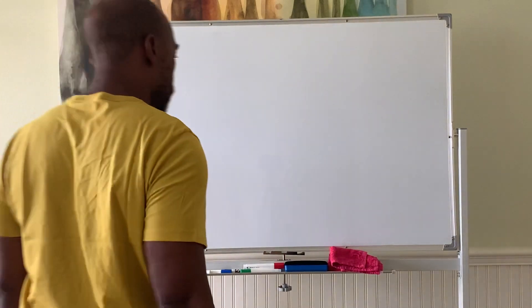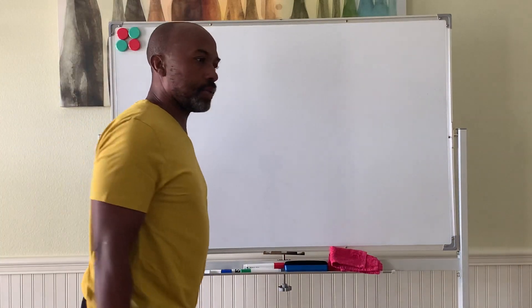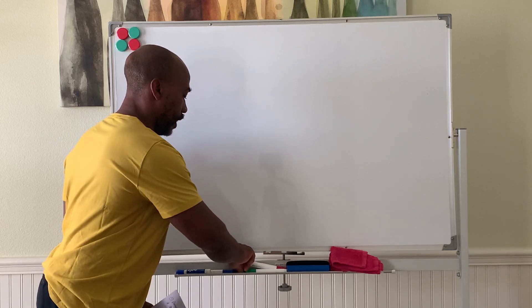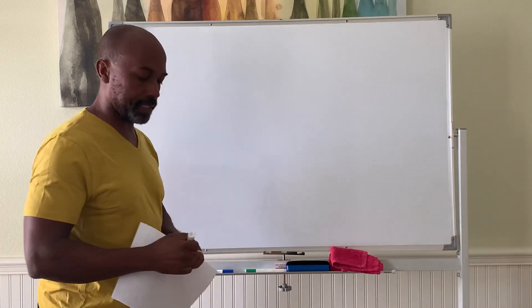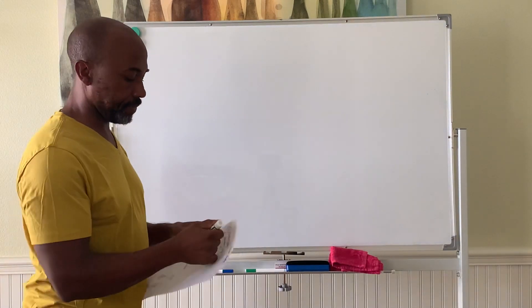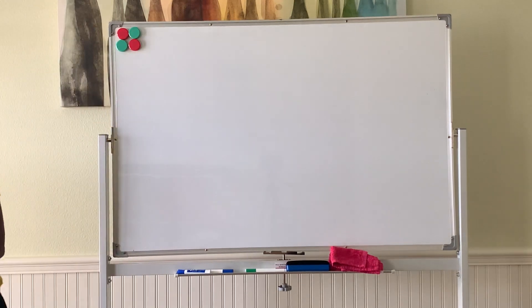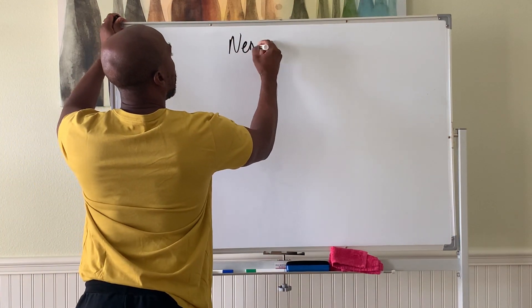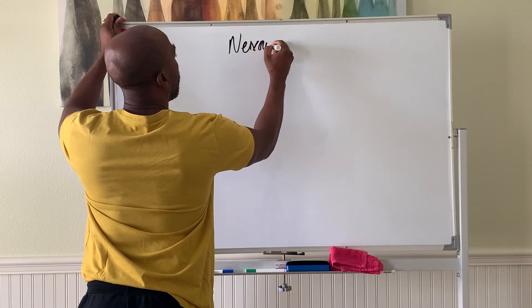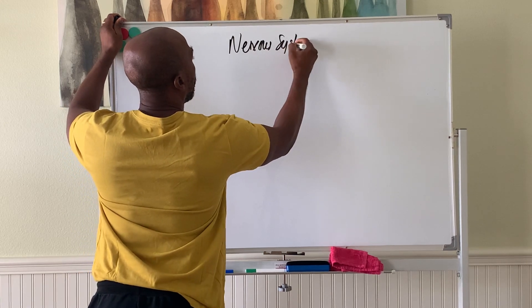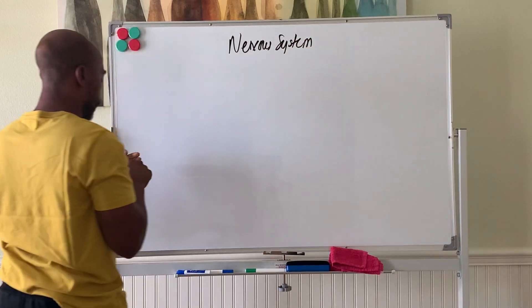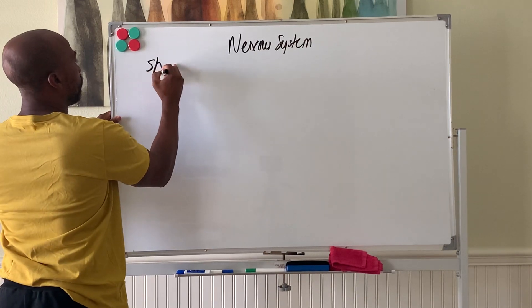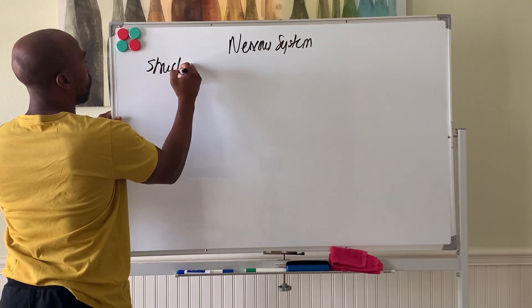Today we'll talk about the nervous system. We'll start with an overview. The nervous system has two structural divisions.